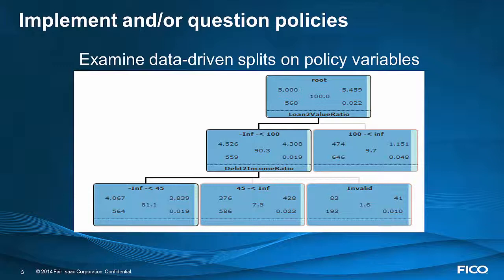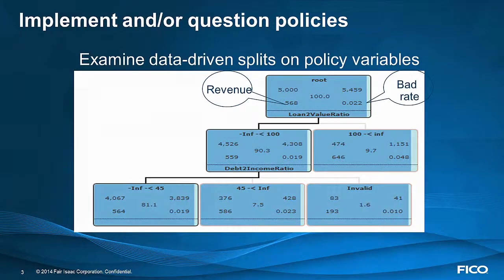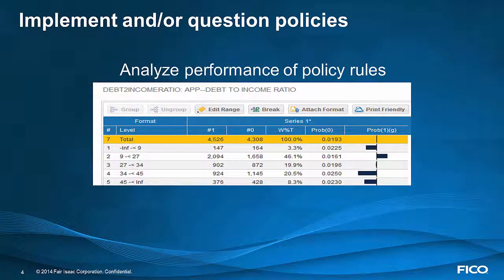In this example, we have two policy rules: loan-to-value ratio at 100% and debt-to-income ratio at 45%. We're looking at two different outcomes — bad rate and average revenue. If you knew that the debt-to-income ratio split could potentially be changed, one of the things you can do is look at the splits that the data wants to give you in addition to the policy rule that you have. In this case, we see that the segment between 34 and 45% is just as bad, with a probability of zero, as high as the split over 45%. This might cause us to question our decision rule, our policy rule.